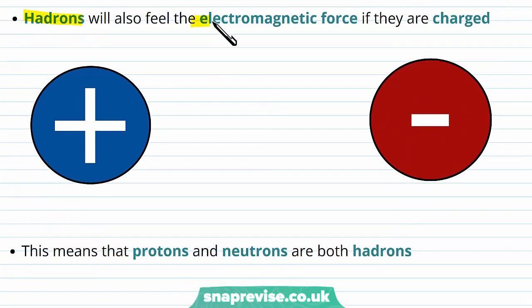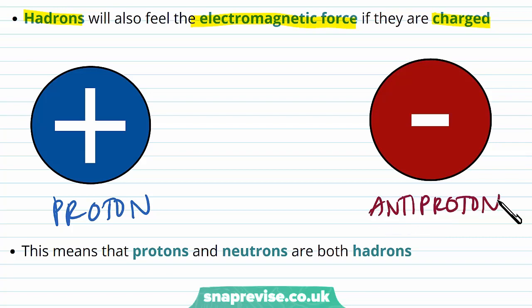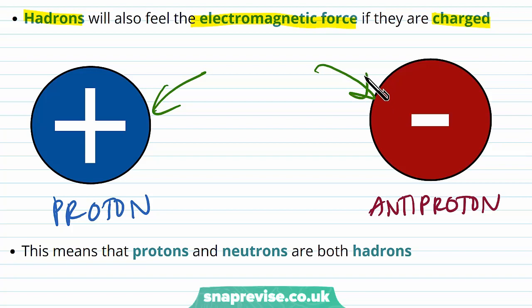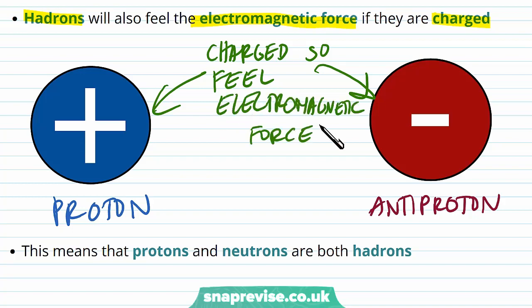Hadrons will also feel the electromagnetic force if they are charged. For example, we can consider a proton and its antiparticle, the antiproton. Both of these particles are charged — the proton is positively charged and the antiproton is negatively charged — and since they're charged, they experience the electromagnetic force.